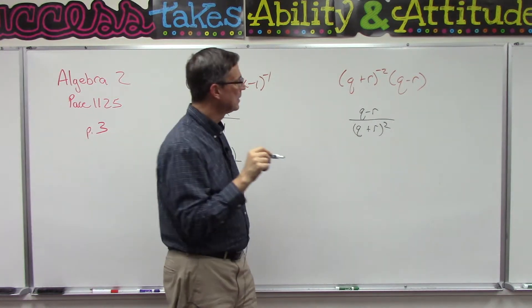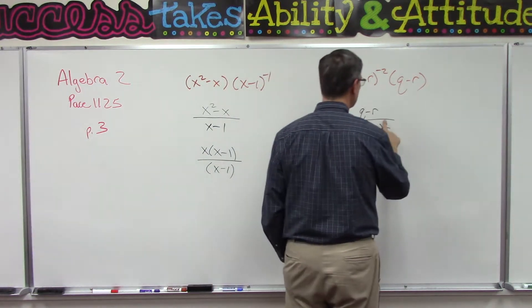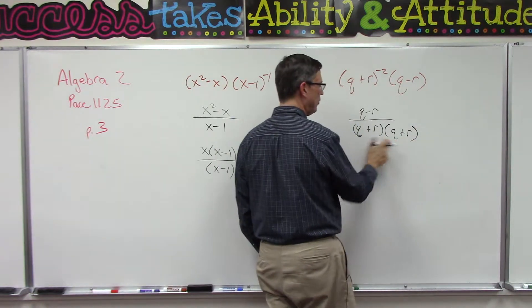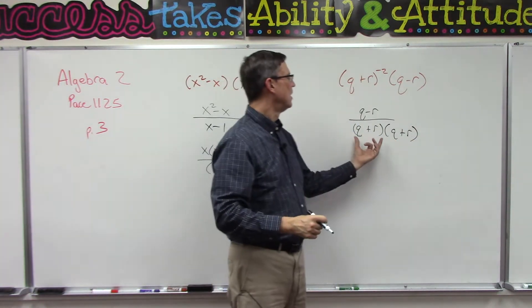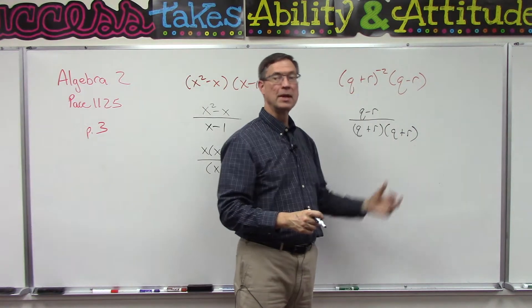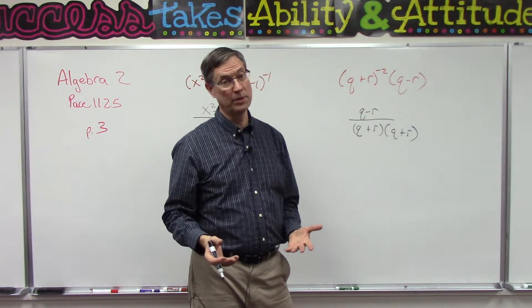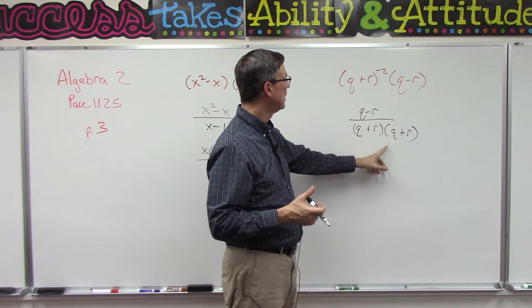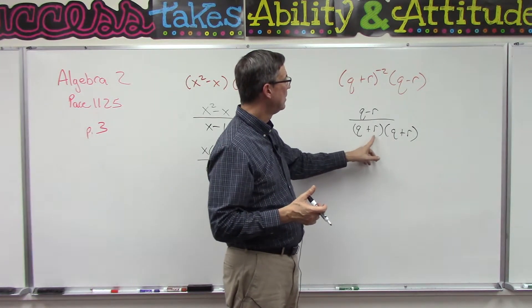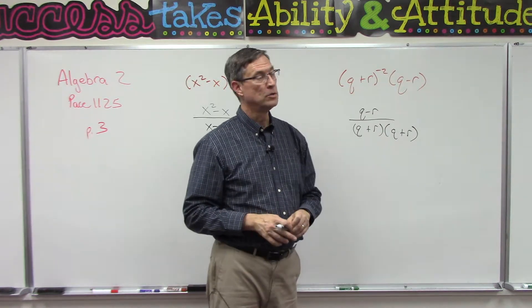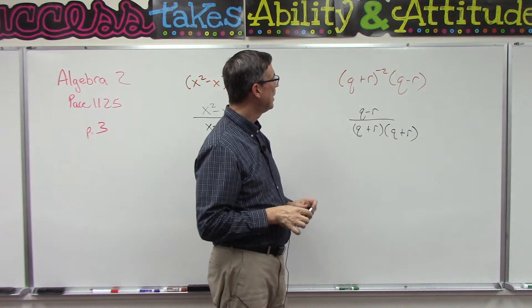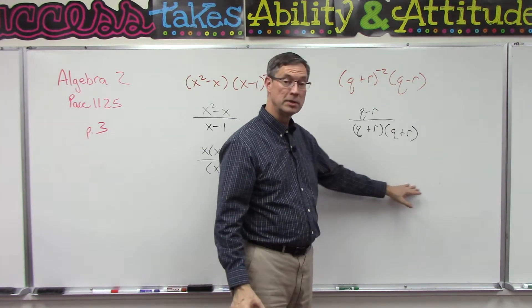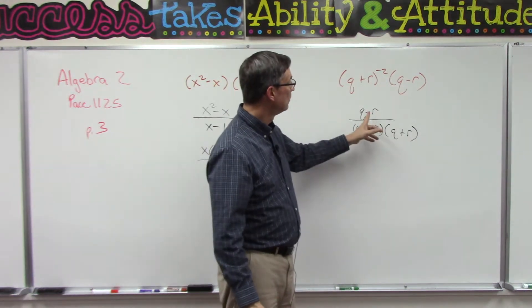So it's like this parentheses times the same thing and now we have to do the FOIL method. So you're going to do Q times Q and then QR and then another QR and then the R times R. So again I don't think I'm going to go any further with that because once you have those and you've combined the like terms you should have three things in the denominator and then we'll just have the Q minus R in the numerator.